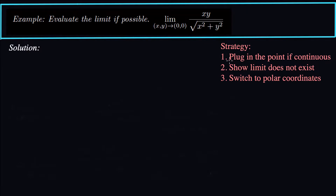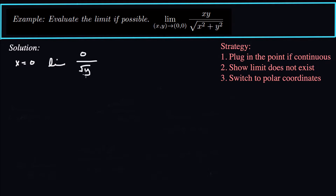Our second strategy is to show the limit does not exist. So maybe the limit doesn't exist if we can't just plug it in. Let's try to show that. Let's try x equals zero — the limit would be zero over the square root of y squared as y goes to zero. That would be zero. But that doesn't really show us anything; we can only claim the limit doesn't exist if we get different limits through different paths. So let's try a different path to the origin.